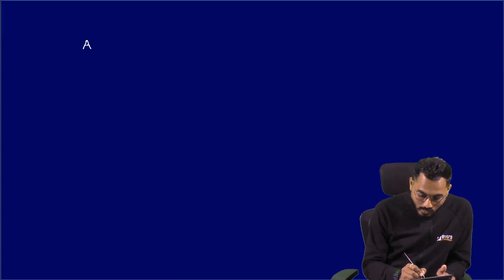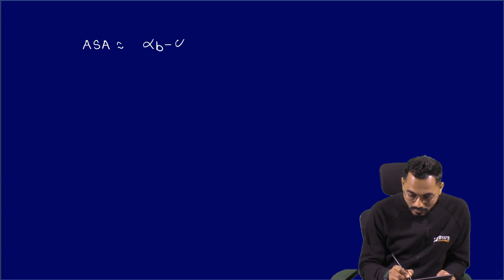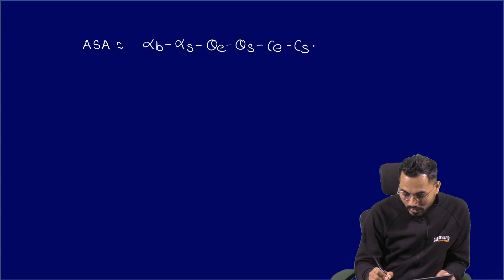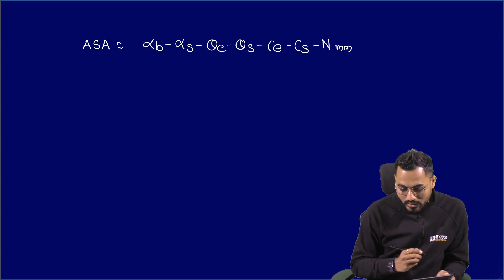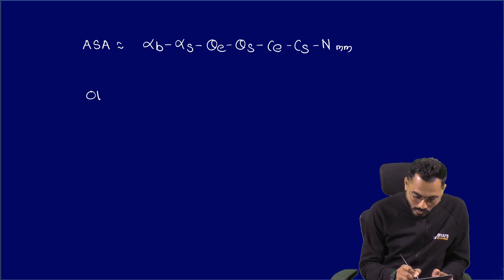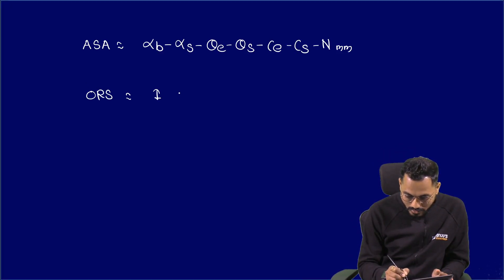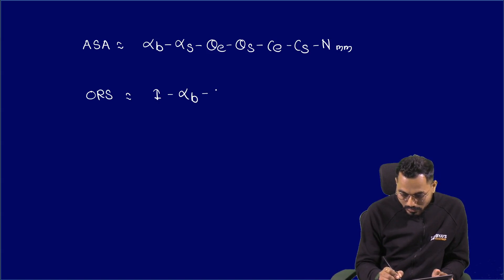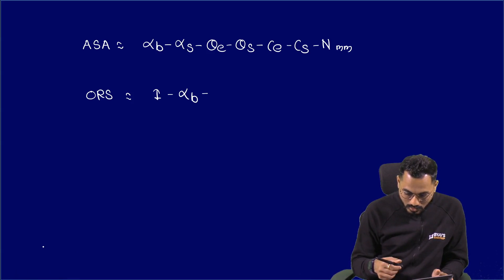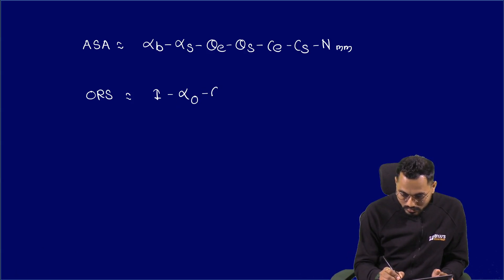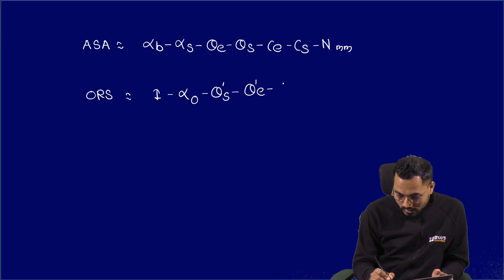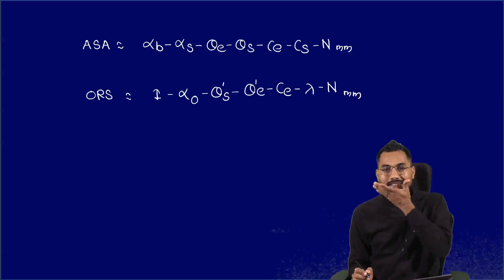If I talk about an ASA tool signature, it looks like: alpha_b, alpha_s, theta_e, theta_s, C_e, C_s, and nose radius — in millimeters or inches. If I talk about an ORS tool signature, it looks like: alpha_i, alpha_o, lambda, theta_dash_s, theta_dash_e, C_e, lambda, and N.